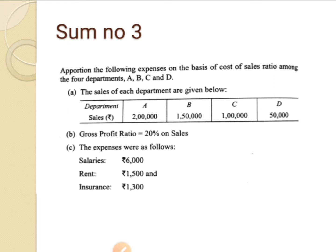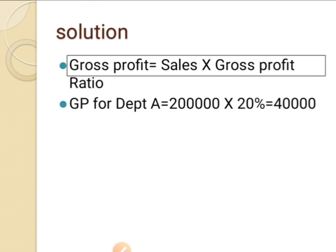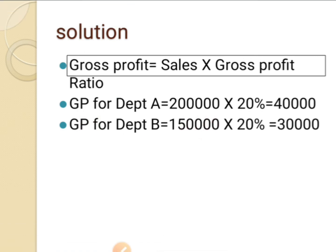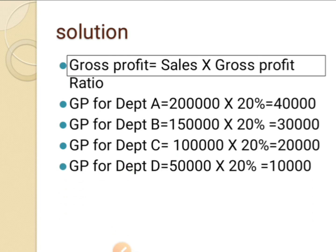First, since sales and gross profit ratio of 20% are given, find out the gross profit of each department. Gross profit equals sales multiplied by gross profit ratio. For department A: 2 lakh into 20% = 40,000. Department B: 1,50,000 into 20% = 30,000. Department C: 1 lakh into 20% = 20,000. Department D: 50,000 into 20% = 10,000.